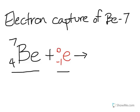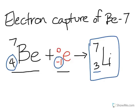The answer to this problem is lithium-7. All we need to do for this type of problem is add the atomic numbers. This was a 4 and it's a negative 1, so 4 plus negative 1 gives me a positive 3. This is the answer to this beryllium-7 electron capture problem.